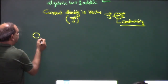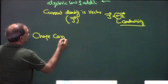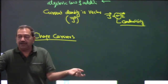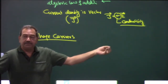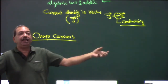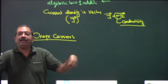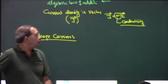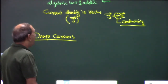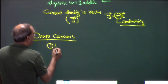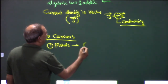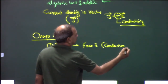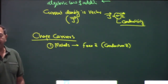Now, charge carriers. Current means motion of charge; charge is a property of particles. The particles that carry charge are called charge carriers. In metals, the charge carriers are free electrons, also called conduction electrons.